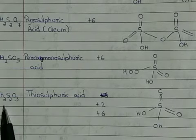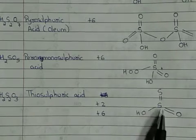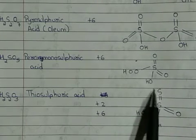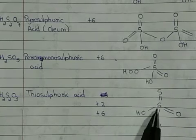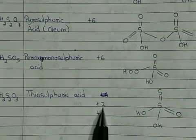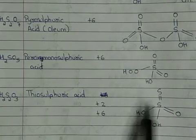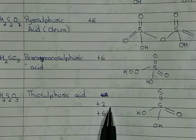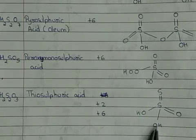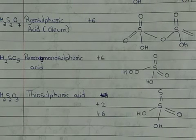The last oxo acid of sulfur is thiosulfuric acid (H₂S₂O₃). Its bonding is somewhat different: the two sulfur atoms are attached to each other by a double bond. The central sulfur has one S=S double bond, one S=O double bond, and two S–OH single bonds — six bonds total — giving an oxidation state of +6. The peripheral sulfur, attached only by the double bond, has an oxidation state of −2. This is an important structure where both sulfur atoms have different oxidation states.